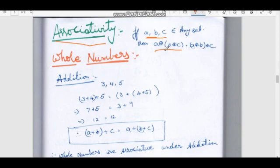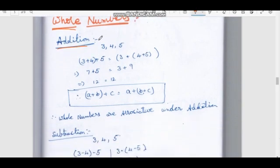Let's talk about the A set. The whole numbers under addition. The first operation is addition. The numbers are 3, 4, 5. We take the first two: the bracket (3 + 4) + 5. What is it equal to?